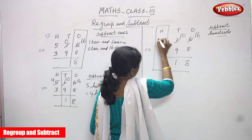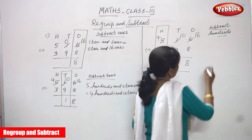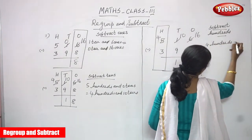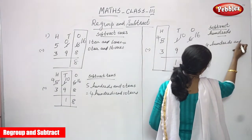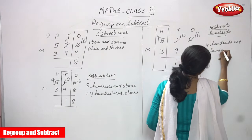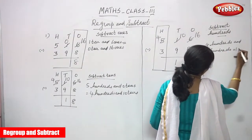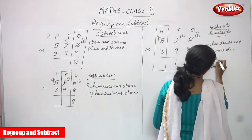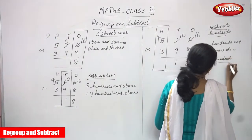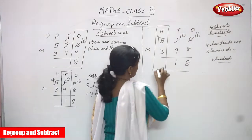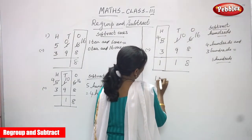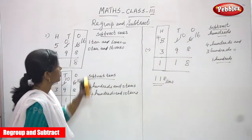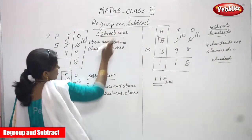For the hundreds place: I borrowed one hundred from five hundreds, so it became four hundreds. Four hundreds minus three hundreds — you can get one. So four minus three equals one. The final answer is 1 in hundreds, 1 in tens, 8 in ones — the answer is 118.